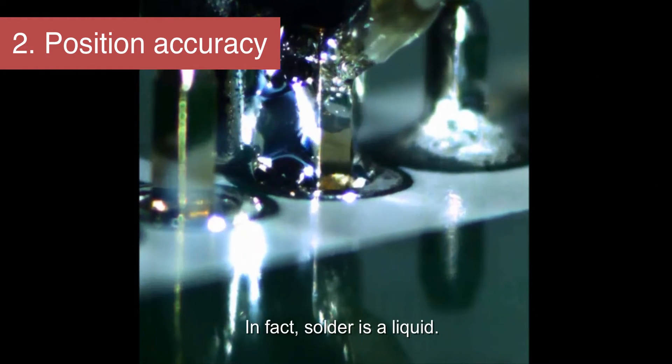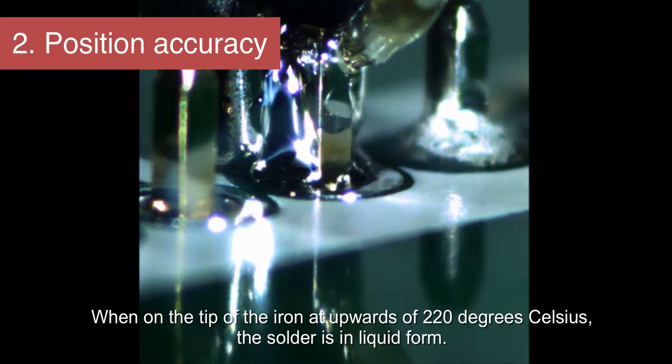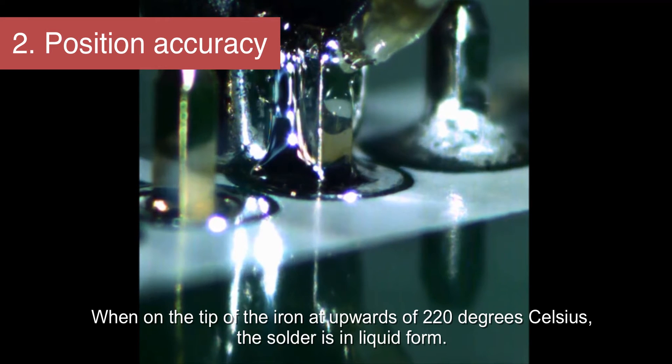On the tip of the iron at upwards of 220 degrees Celsius, the solder is in liquid form.